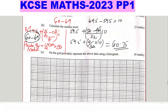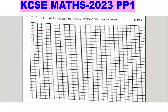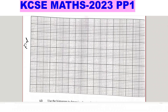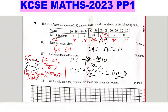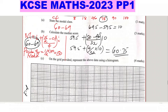Part c: on the grid provided, represent the above data using a histogram. To draw a histogram we need to plot the frequency density. On the y-axis you need the frequency density, and on the x-axis you need the upper class boundary. Frequency density is obtained by dividing frequency by the class width.